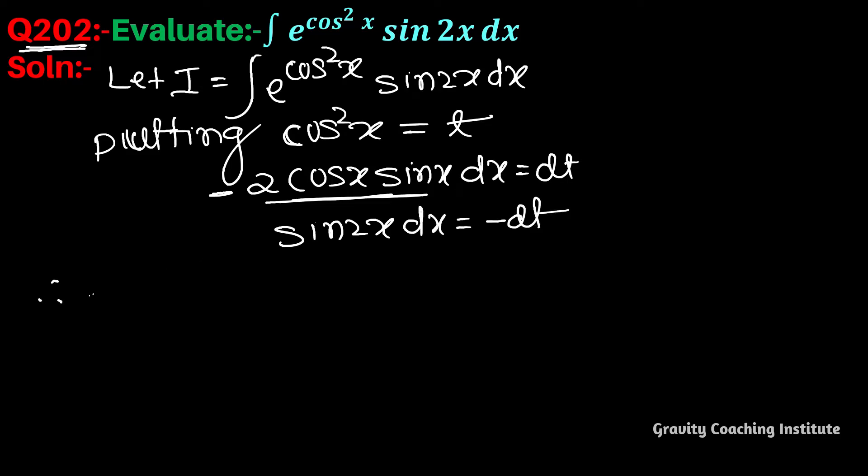So therefore I = ∫... We took cos²x as t, so you got e^t, and sine 2x dx in place of that will be minus dt.